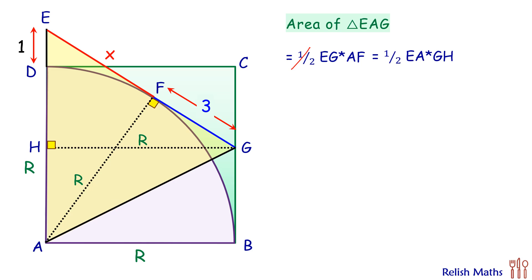Now both sides, if we see, half will get cancelled. Also this length AF is the radius of the circle, and GH is also the radius of the circle, so this will also get cancelled. We'll get EG equals EA, or basically these two yellow lines are equal in length. And thus x plus 3 equals 1 plus R, the radius of the quadrant.